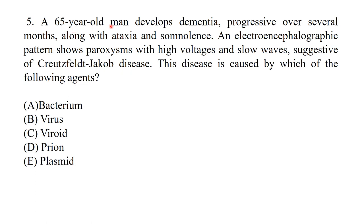A 65-year-old man develops progressive dementia over several months along with ataxia and somnolence. An electroencephalographic pattern shows paroxysms with high voltage and slow waves. This is Creutzfeldt-Jakob disease. The question asks about the causative agent — Creutzfeldt-Jakob disease is caused by prions.